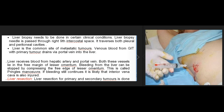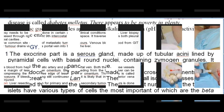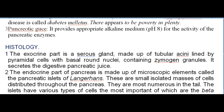If bleeding continues after Pringle's maneuver, it is likely that the inferior vena cava is also injured. Liver resection for primary and secondary tumors is done commonly; 80% of liver mass can be removed safely, and the liver can regrow to its original size within 6 to 12 months. Major resections follow the planes between segments. Liver transplantation can be done in patients with end-stage liver disease; implanting the graft requires inferior caval anastomosis followed by portal vein anastomosis, then arterial and biliary anastomosis.